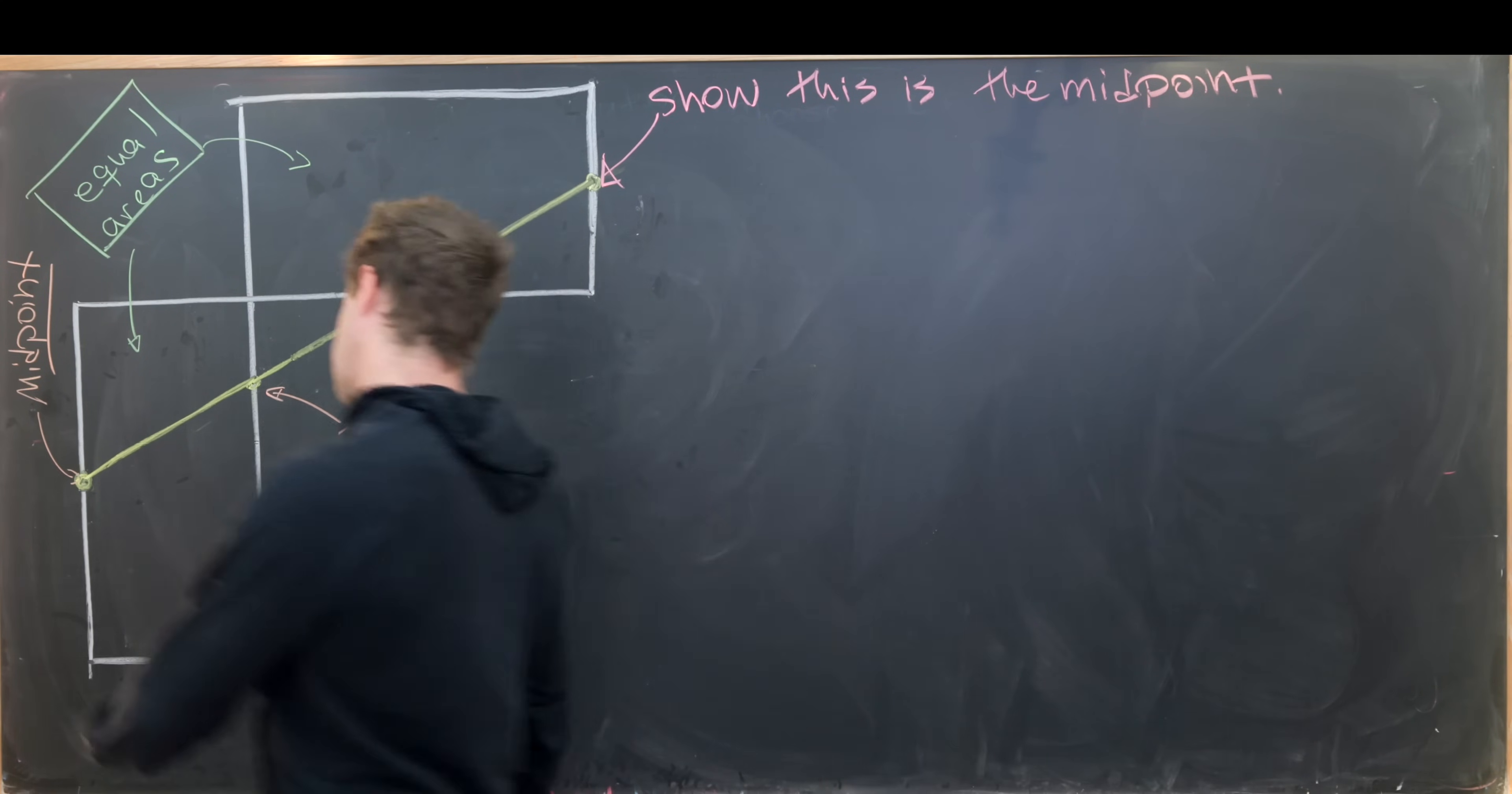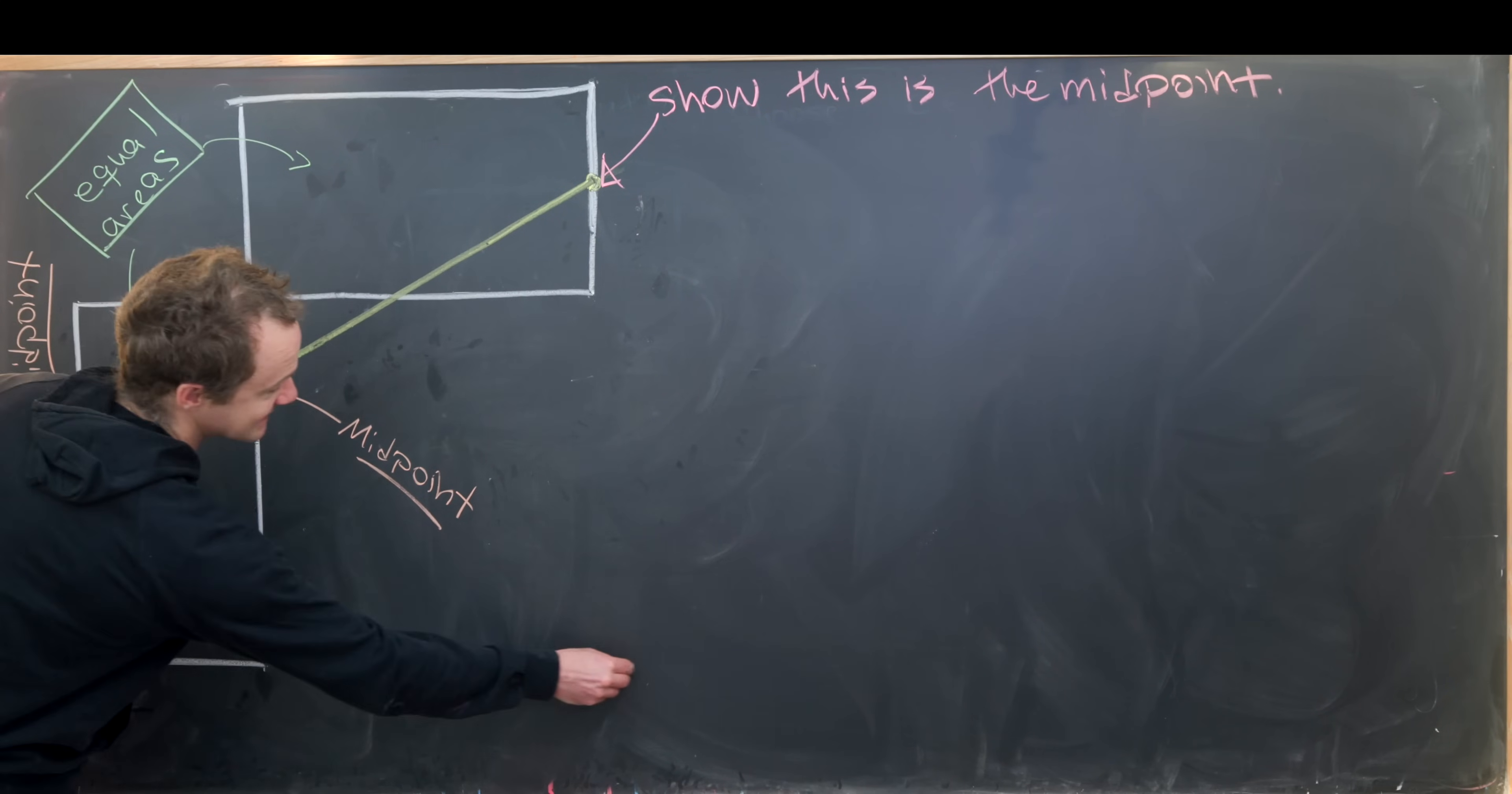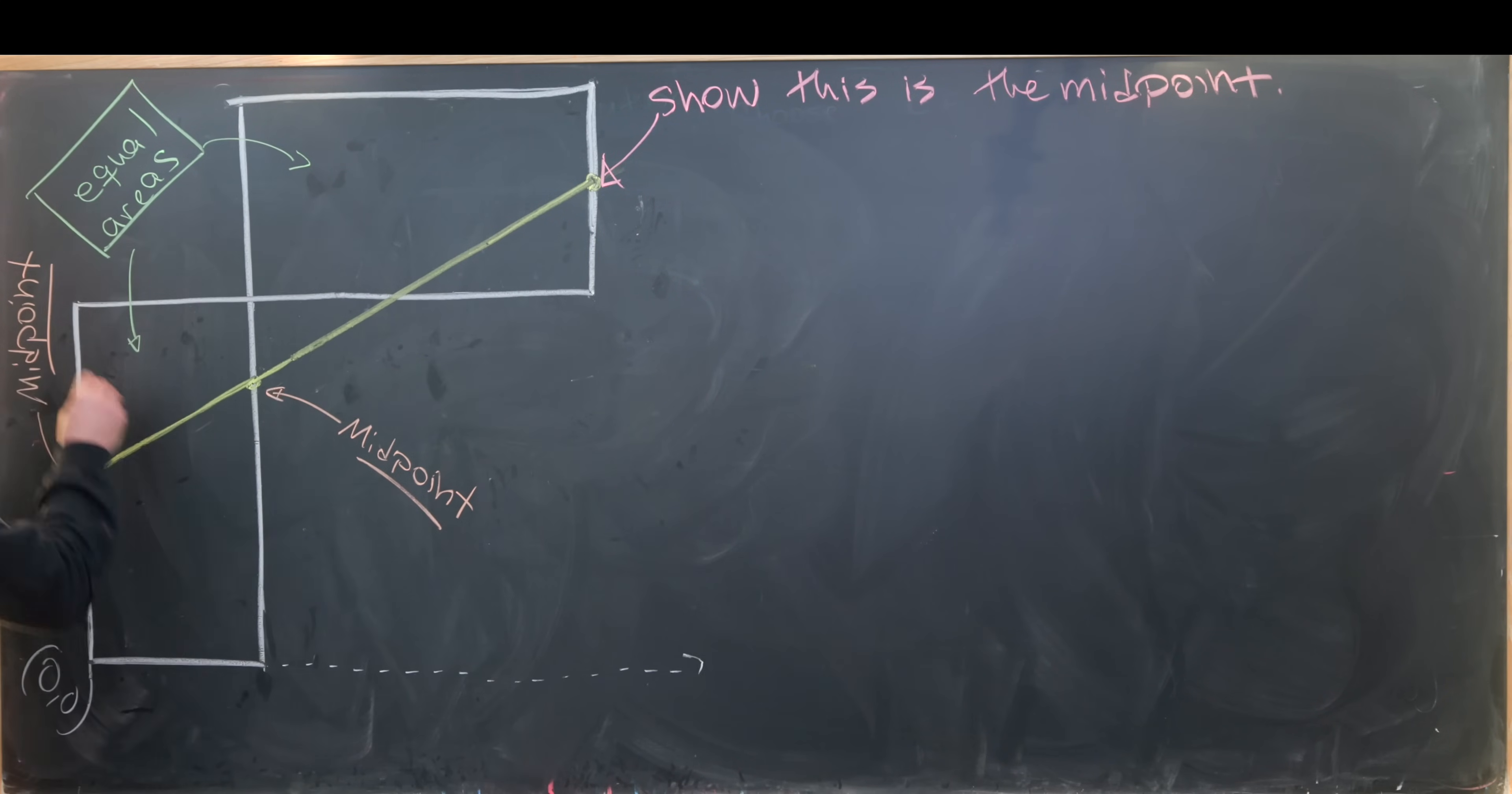I'm going to say that this over here is the origin, so I'll call this point (0,0). I'll extend out my x-axis in this direction and my y-axis in this direction.